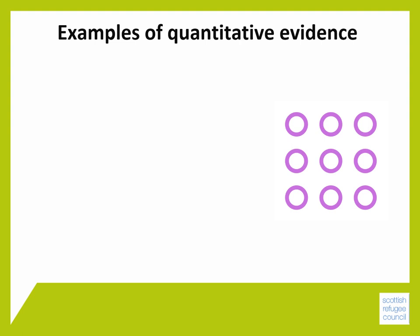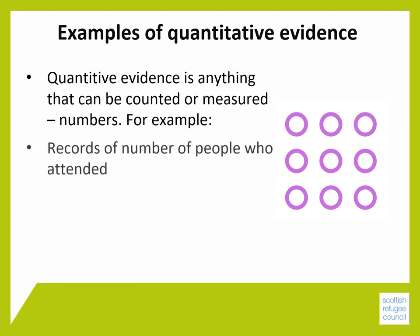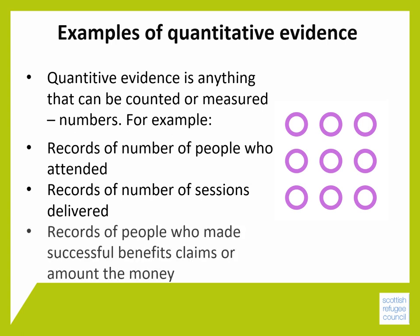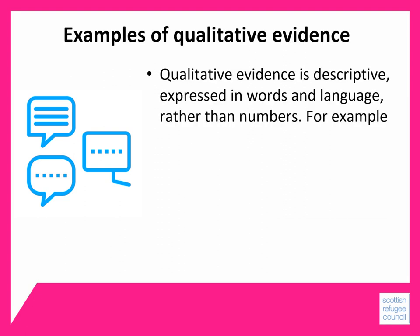Let's think firstly about quantitative evidence. Quantitative evidence is anything that can be counted or measured. For example, you may keep a spreadsheet or a database where you can record the number of people who attended your sessions, or the number of sessions you delivered. If you were supporting people to access benefits, you could count how many people you helped to make successful benefit claims, or the amount of money you managed to help them access. This kind of evidence is all about numbers.